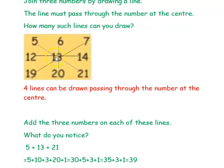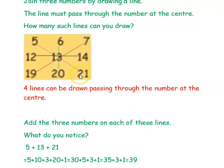Then 12, 13, 14 — third line. Then 19, 13, 7 — fourth line. You cannot draw a line like 5, 6, 7 because it does not pass through the center number. Same way you cannot go for 19, 20, and 21 because it does not pass through the center number. So only these lines are possible — we have drawn four lines passing through the number at the center.